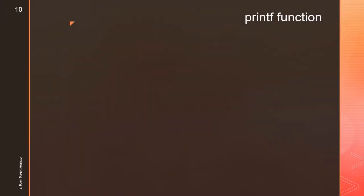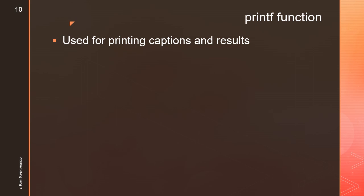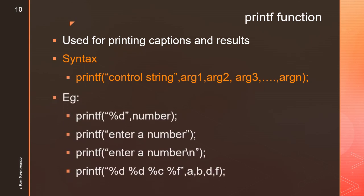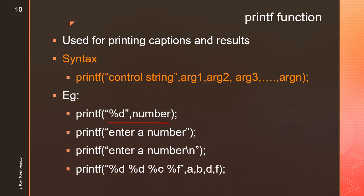The printf function is used for printing captions and results. Its purpose is to display variable values and captions. The syntax is: printf with a control string and arguments — argument1, argument2, argument3, etc. For example, printf("%d", number) prints an integer. A caption like "Enter a number" is displayed on the monitor. The difference from scanf is that printf does not use ampersand before variable names.